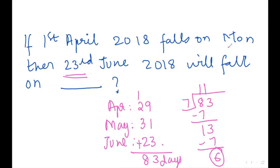Dividing 83 by 7 gives a remainder of 6. So from Monday we go 6 days forward: Tuesday, Wednesday, Thursday, Friday, Saturday, Sunday. Therefore, 23rd June 2018 will fall on Sunday. Thank you so much, students.